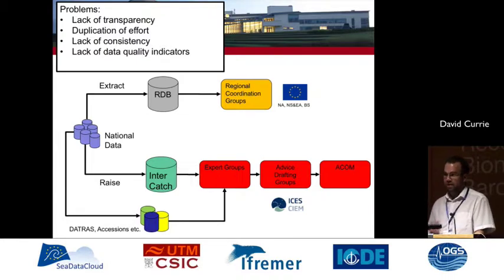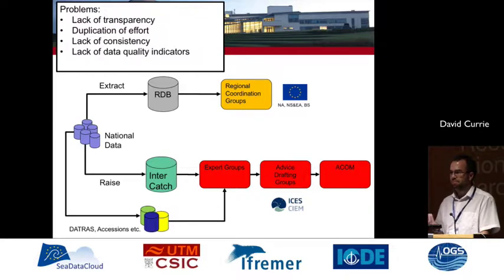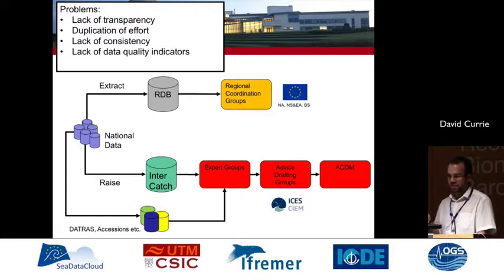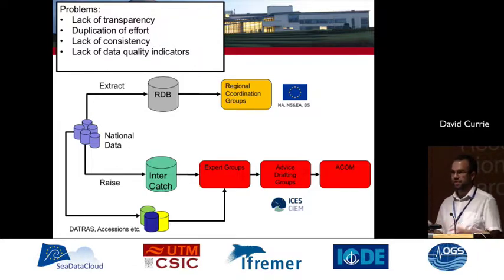The main problems are lack of transparency. When talking about the raised data, you don't really see how people raise it — all you see is the final output in Intercatch. There's duplication of effort because each country does everything independently, often using different techniques. There's also duplication of data between the regional database and Intercatch, extracted in different ways, almost certainly not giving exactly the same answers. And there's lack of consistency because each country does its own thing, and a lack of data quality indicators.